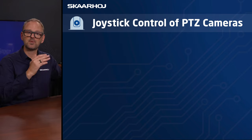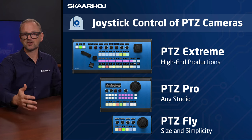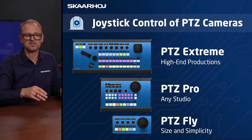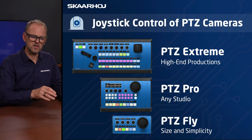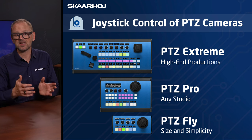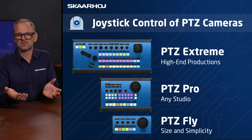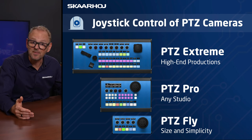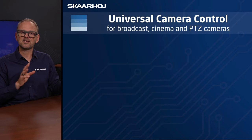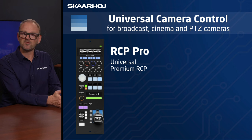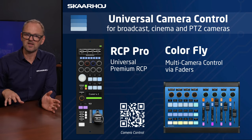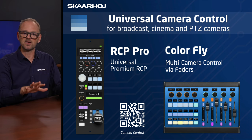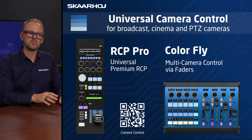For PDC control, you'll find PDC Extreme, PDC Pro, and PDC Fly. PDC Extreme is the largest controller, definitely for high-end productions. PDC Pro is very generic — it's like the middle option, great for any studio or fly-away kits, with a good deal of buttons and direct control. And finally, PDC Fly is the size and simplicity option that a lot of people are going for, because it is not intimidating to the average operator. Inside camera control, we have RCP Pro — classic RCP form factor — and then we have ColorFly, which is vastly different because it is a different form factor with motorized faders, perfect for multi-camera control. RCP Pro is best for single camera use.